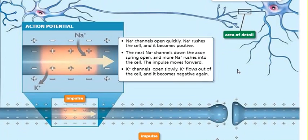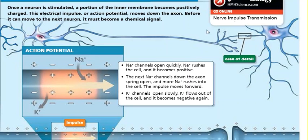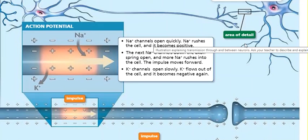Now this is where it gets a little complicated, but it's manageable. This is the terminal of the axon, this is the axon, this is the cell body, and these are the dendrites. Normally, the dendrites of one neuron cell are connected to the terminal of the axon of the next cell. This area is called the synapse.